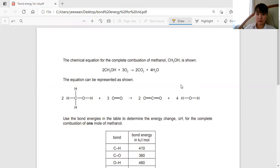The chemical equation for complete combustion of methanol, CH3OH, is shown here. Remember there are two moles of methanol. The question says use the bond energies in the table to calculate the enthalpy change for the complete combustion of one mole of methanol.